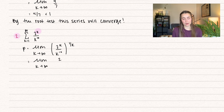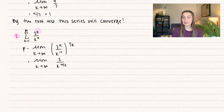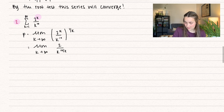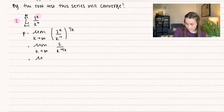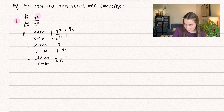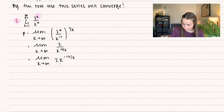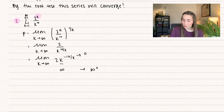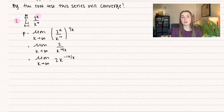After applying the kth root, we get 2 in the numerator and k to the power of 10 over k in the denominator. We can rewrite this as 2 times k to the negative 10 divided by k. As k approaches infinity, k approaches infinity and the exponent negative 10 over k approaches 0 — this is an infinity to the 0 indeterminate form. It's not yet in the fraction form needed for L'Hôpital's rule, so we need to take the natural log of both sides.